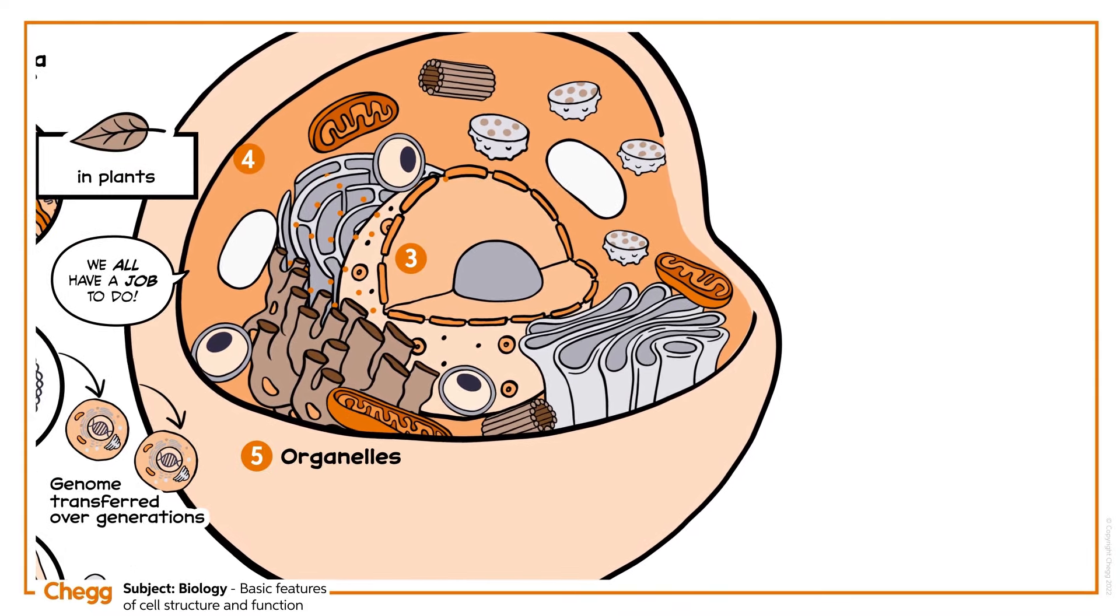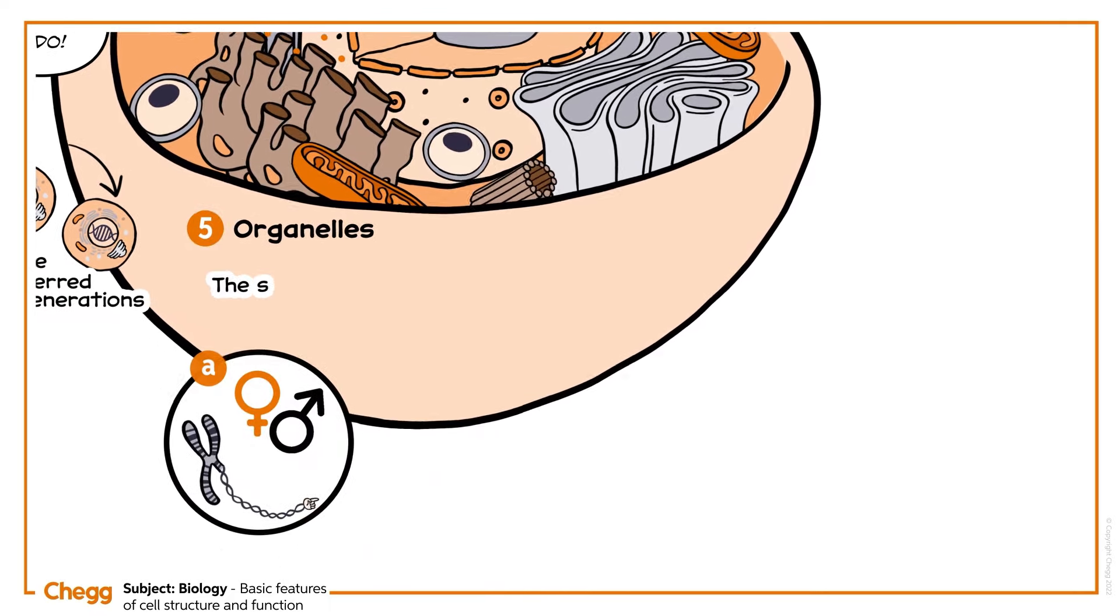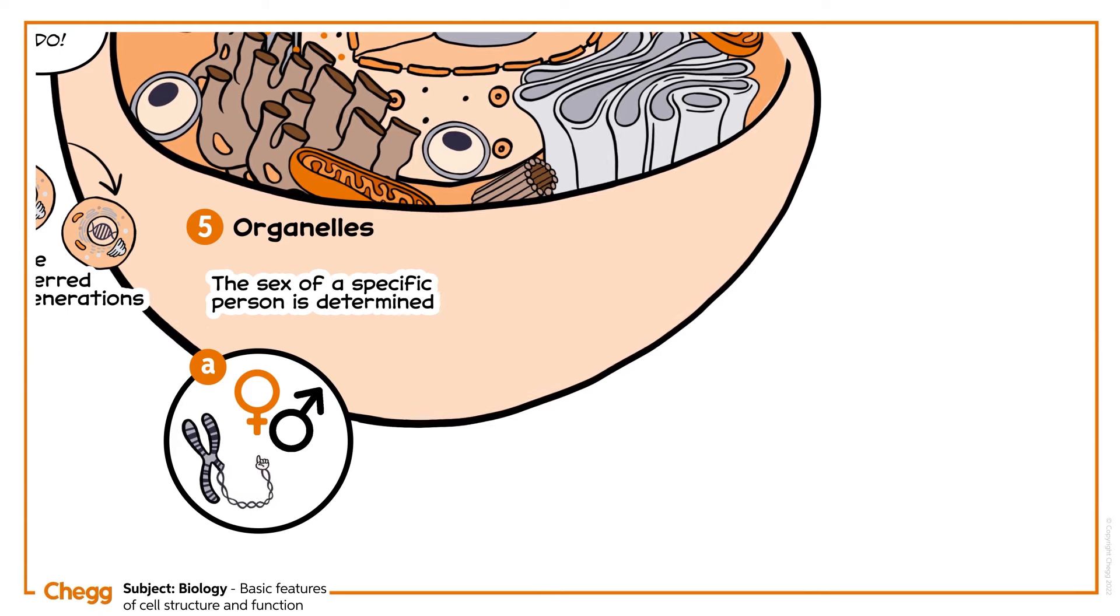Cell organelles: The specific tasks carried out by cells are done by their organelles. The sex of a specific person is determined by their chromosomes.